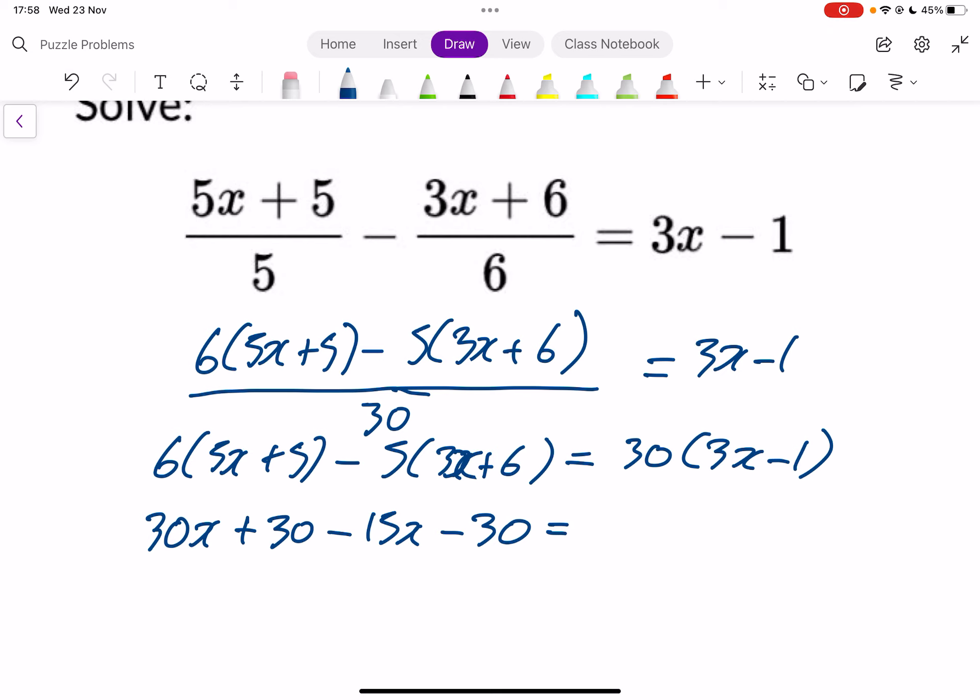And then on the other side, multiply it and tidy up, you will have 90x minus 30. Okay, we'll tidy up the left-hand side. So you've got 30x minus 15x, which just gives you 15x. And then you've got plus 30 minus 30. Oh, happy days, that just disappears. You've just got 15x. And on the right-hand side, you've got 90x minus 30.